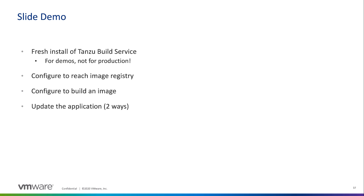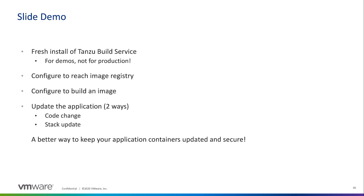With this image configuration, I will show you two ways in which Tanzu Build Service updates your application. First, I'm going to make a simple code change to the application. After I commit the new code, Tanzu Build Service will pick this up as a change to one of the layers it monitors and rebuild a new image. Next, I'm going to provide Tanzu Build Service with a patched base OS image to simulate an OS patch being applied to the container, and Tanzu Build Service will again rebuild the container automatically. Okay, now on with the demo.